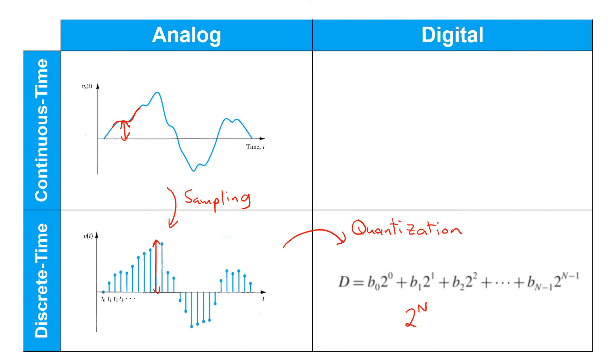In principle, it's also possible to have a quantized signal represented in continuous time. The resulting continuous time digital signal, although possible, is rarely used. So we won't talk about it further.